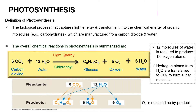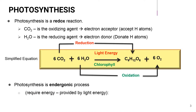The light energy is captured by chlorophyll, which is a pigment found in chloroplasts. With all these inputs, the process will generate glucose, oxygen, and water. In this reaction, 12 molecules of water are required to produce 12 oxygen atoms. Hydrogen atoms from water are transferred to carbon dioxide to form a sugar molecule, and at the same time oxygen is released as a byproduct. Basically, photosynthesis is a redox reaction whereby carbon dioxide is the oxidizing agent — it is an electron acceptor.